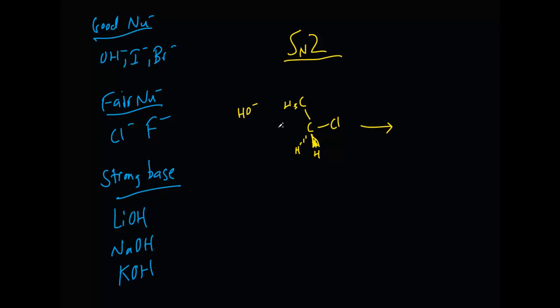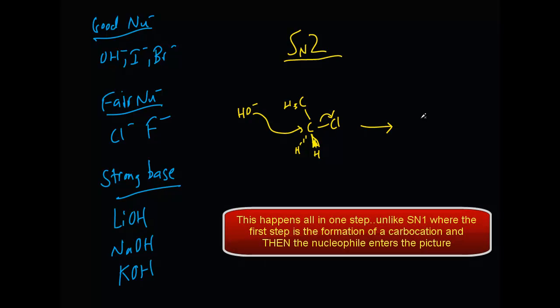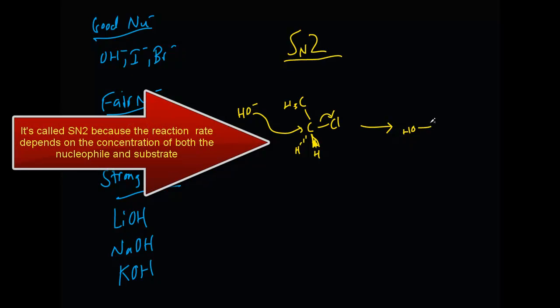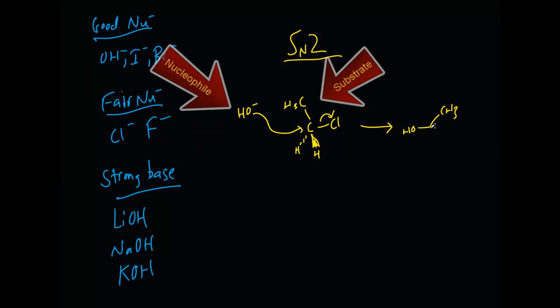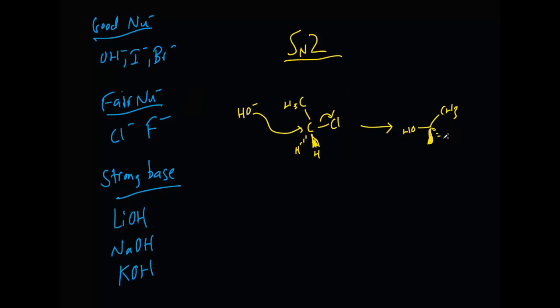Now, what's going to happen here is the nucleophile is going to come in and the leaving group leaves, and it actually kind of pushes it out so that what you have is an inversion. It looks something like this. It almost looks like an umbrella that was inverted. That would be a great way to describe exactly what's happening in SN2.